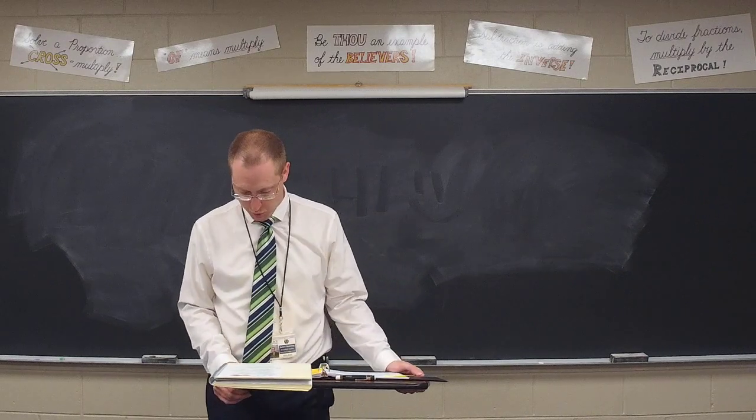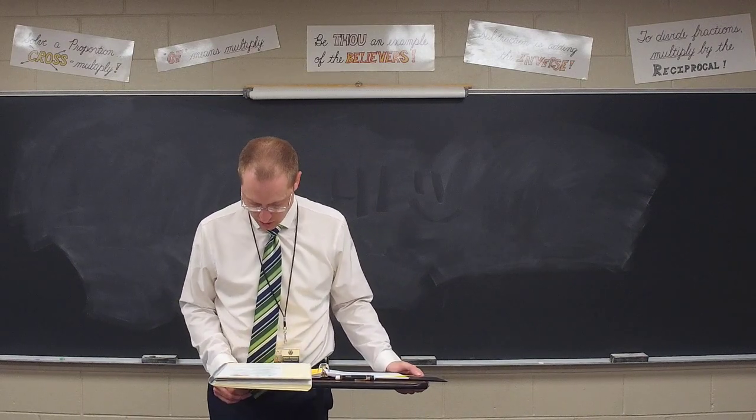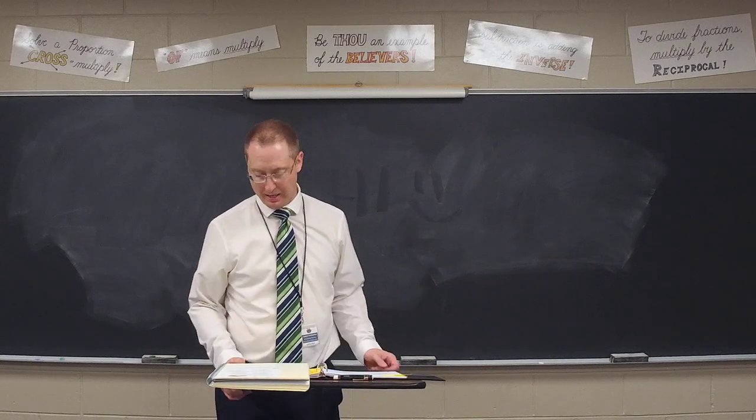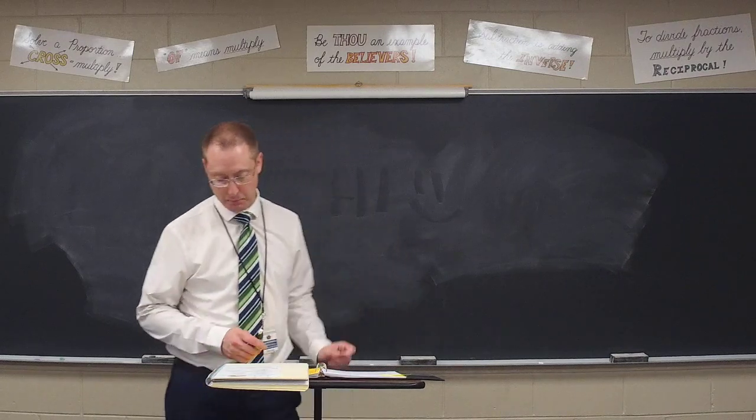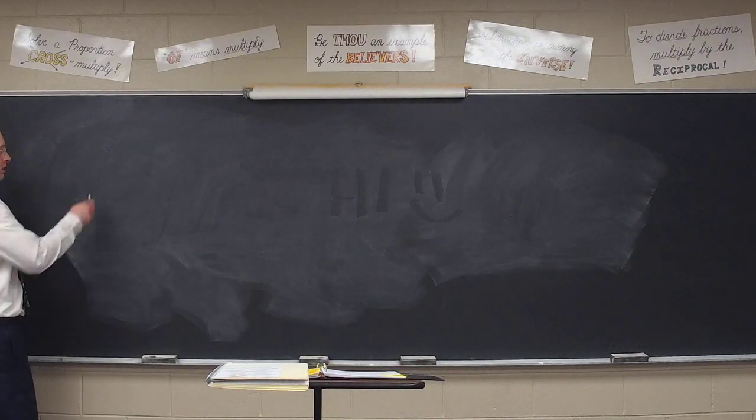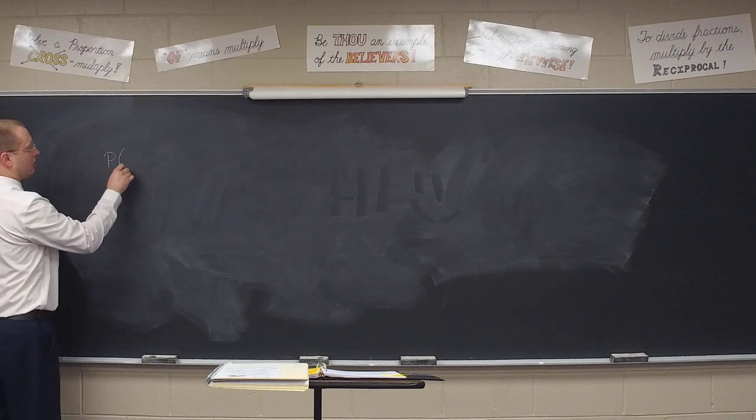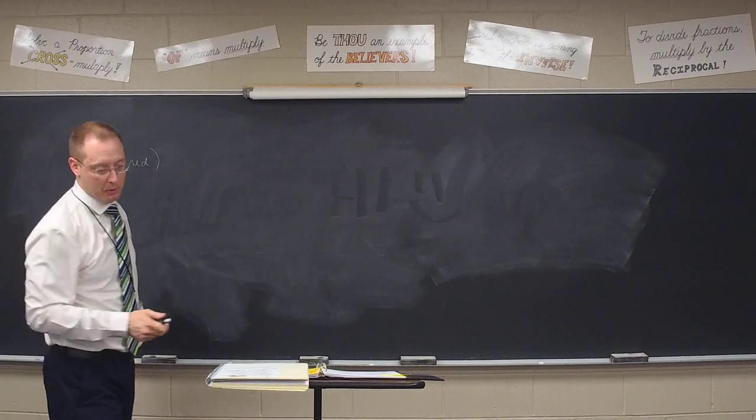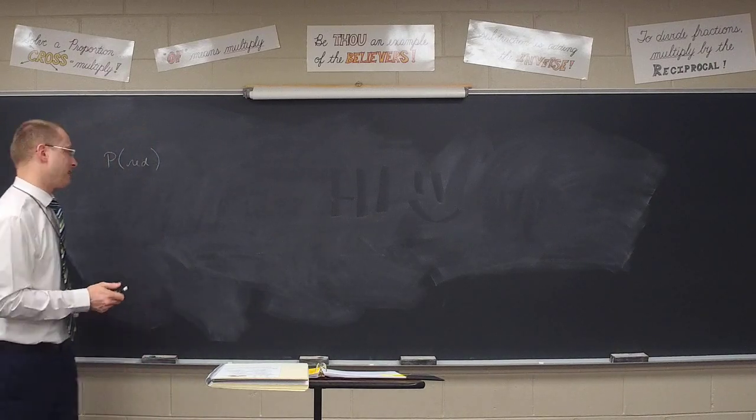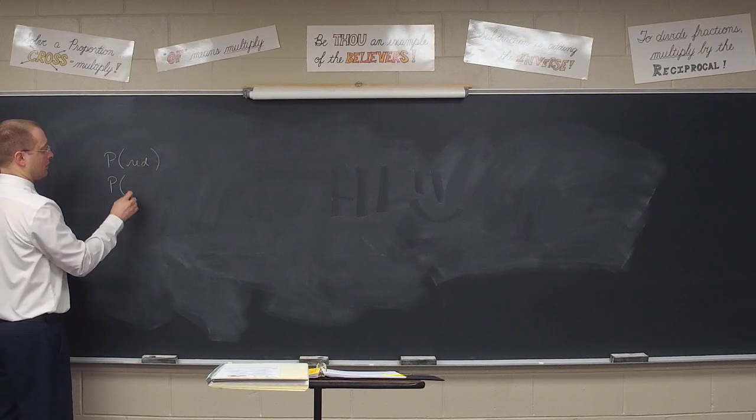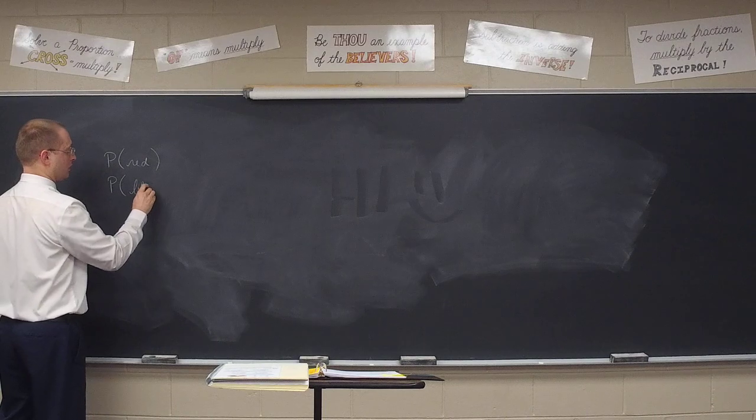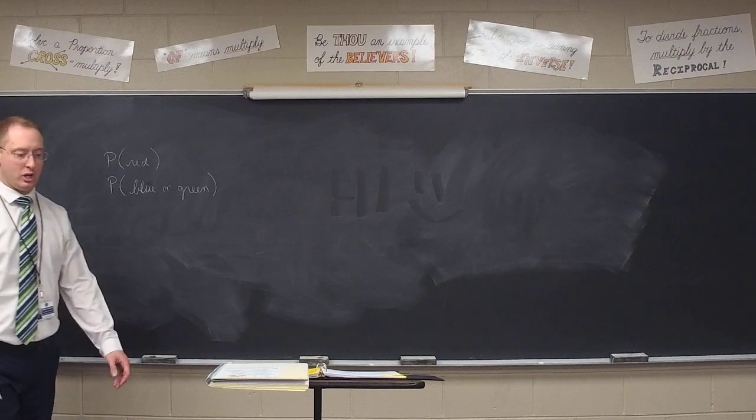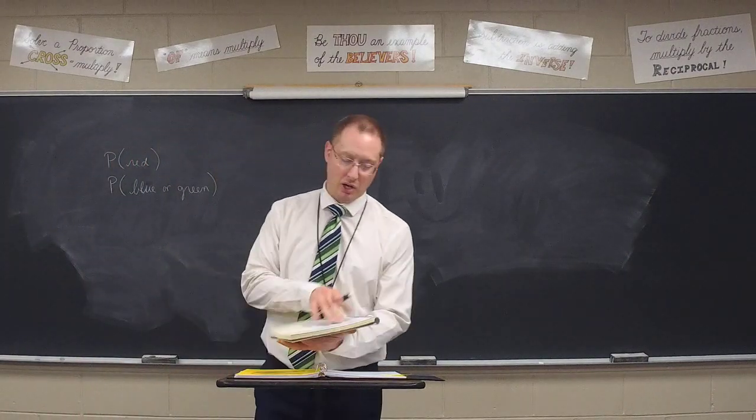Number three, a box contains three balls, red, blue, green. What would be the notation for each of the following? A, pulling out a red ball, or B, pulling out a blue or green ball. Again, probability notation. So, how do we write for letter A, the probability of pulling out a red ball? Bryson? P red. That's it. And what about number part B, Bryson? The probability of either pulling out the blue or green ball? It can be P blue or green. That's probability notation.